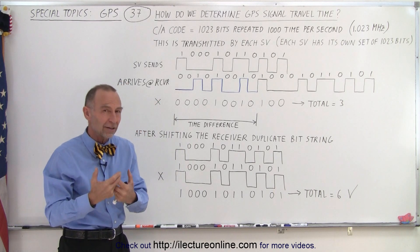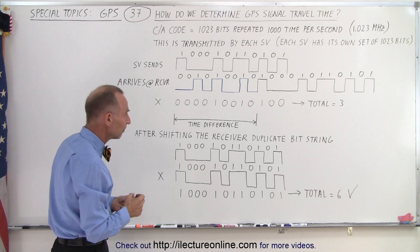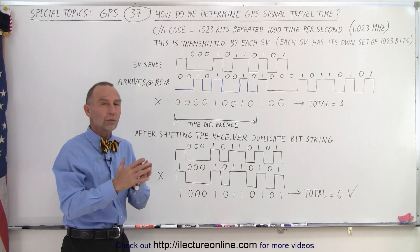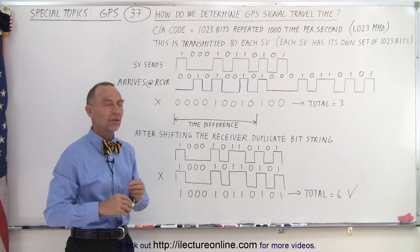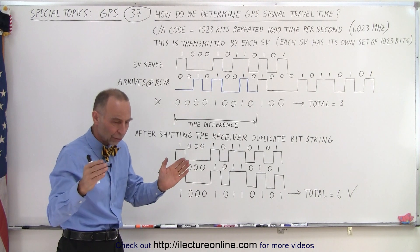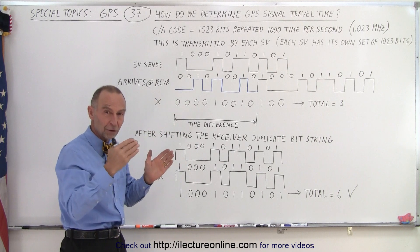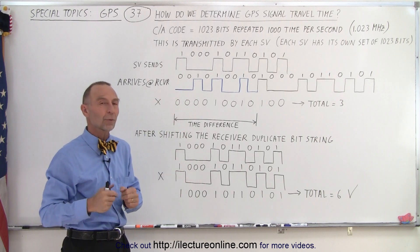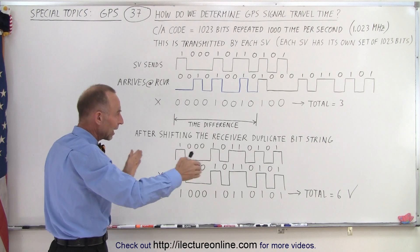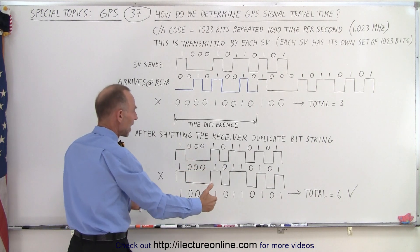Now how do we know that we're dealing with the particular bit string from a particular satellite? Well it turns out that every satellite sends out its own unique CA code and each receiver can duplicate the CA code for every one of the satellites up in the sky. So we first need to make sure that we match up the bit code that we receive to which satellite it is. Once we've done that, then we begin to shift the bit code on the receiver until they match up perfectly.